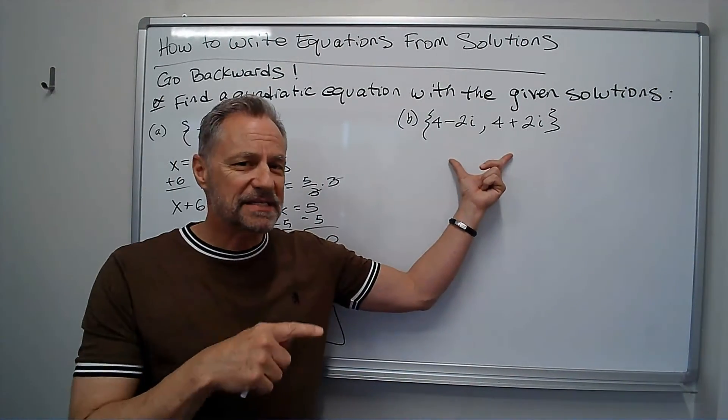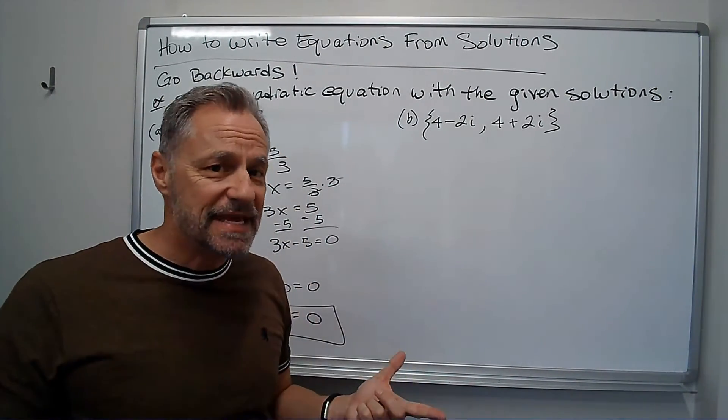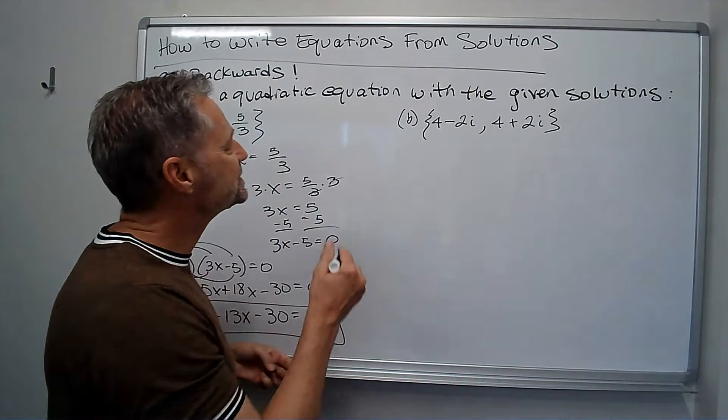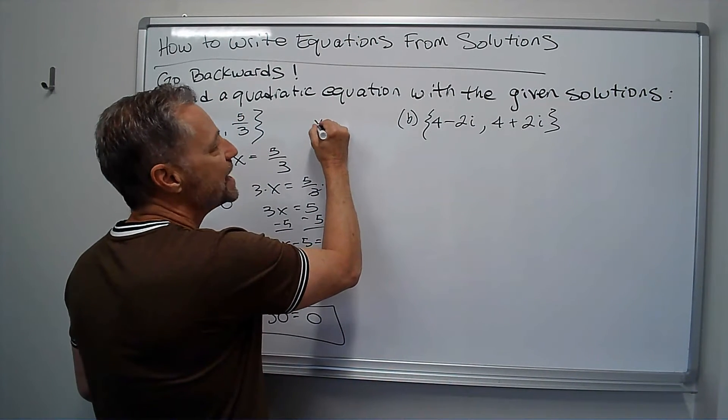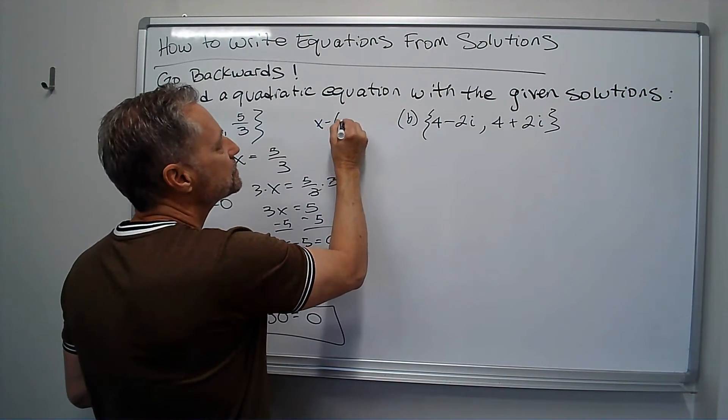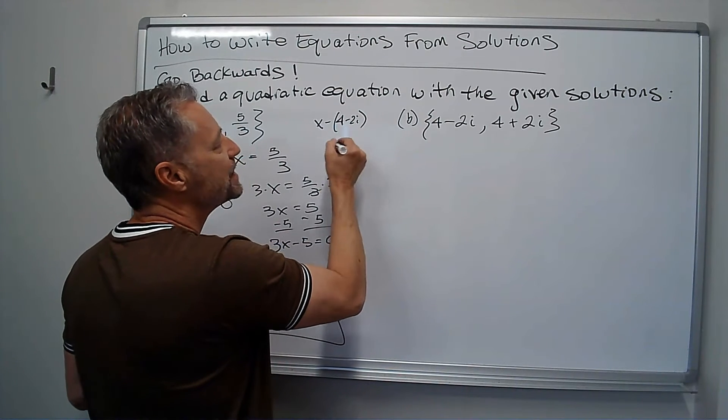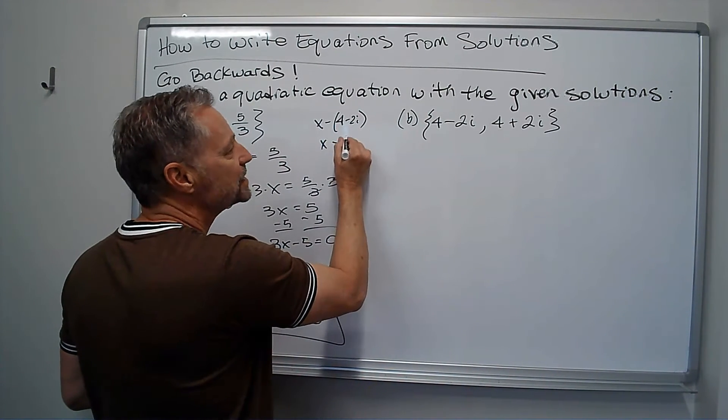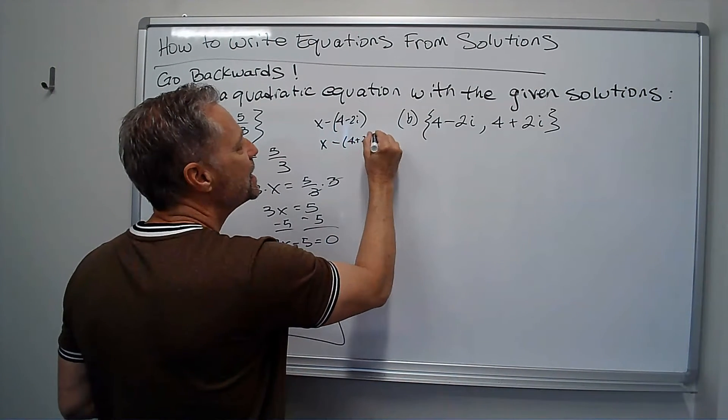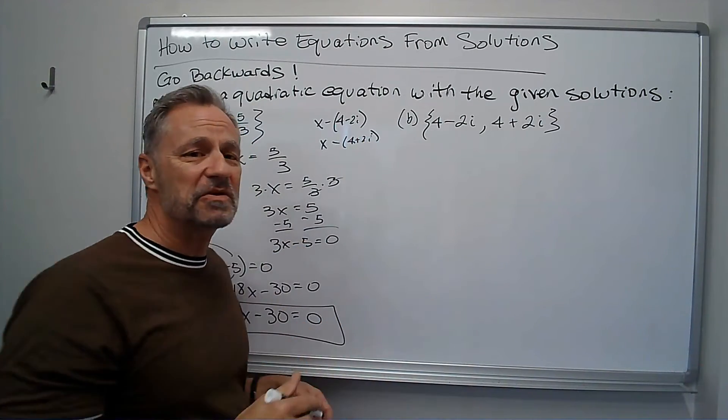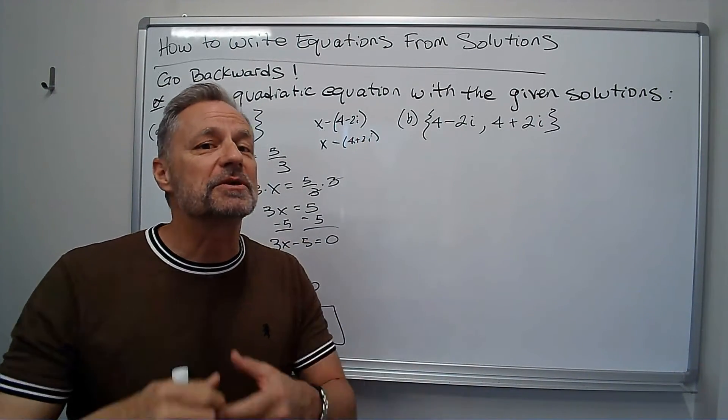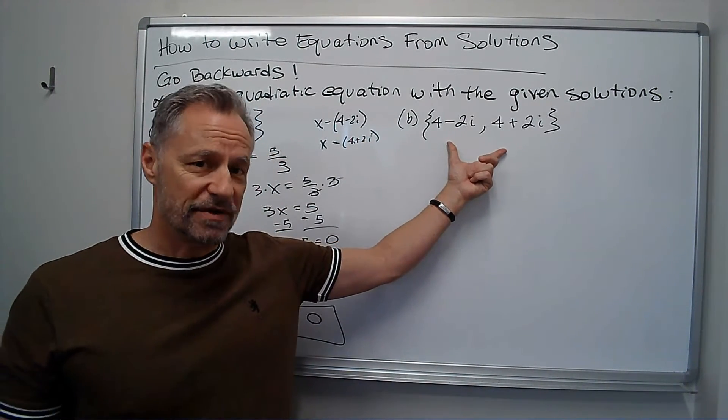Now, when we're given complex numbers, we can do the same thing. We can do something like x minus four minus two i, and then multiply that by x minus four plus two i. And multiply those out. Man, that's a horrible way to do it. There's a much simpler way to do it when you have complex numbers.